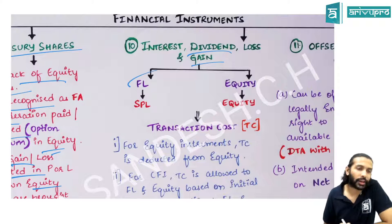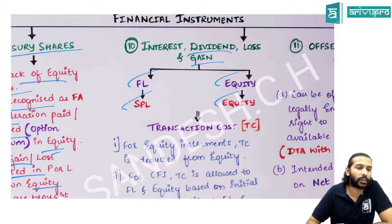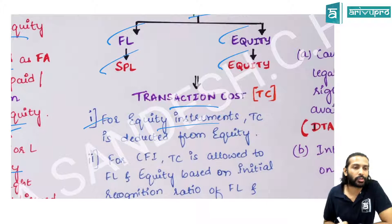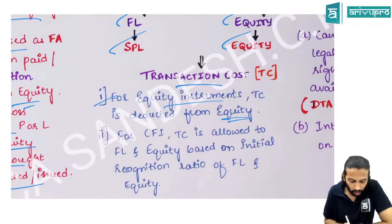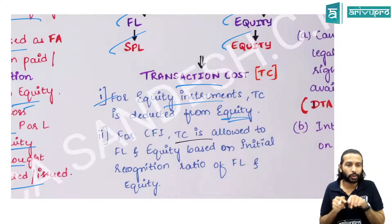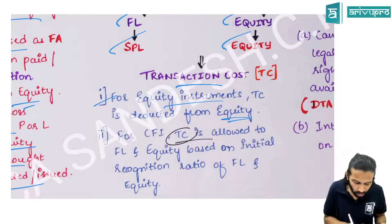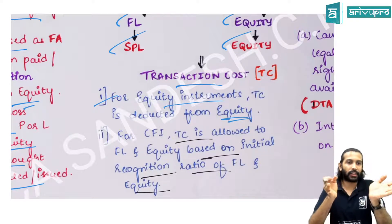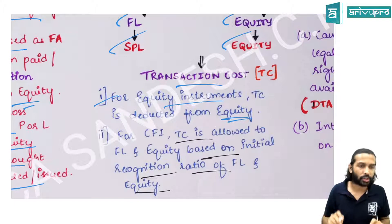Interest, dividend, gain, and loss: if related to financial liability, they go to P&L. For equity shares, dividends are adjusted in equity only. Transaction costs for equity instruments are also adjusted in equity. For compound financial instruments, transaction costs must be split between equity and financial liability in their carrying amount ratio — in the same ratio as the initial split.